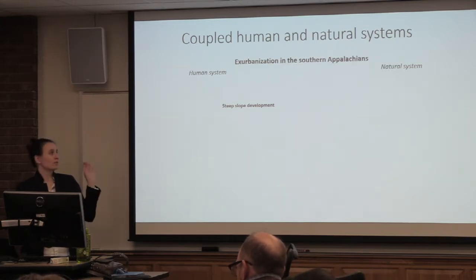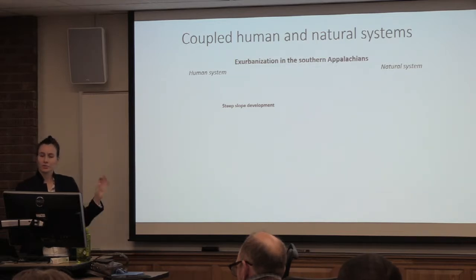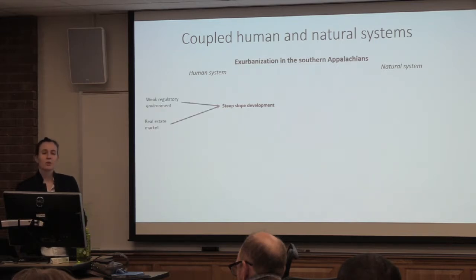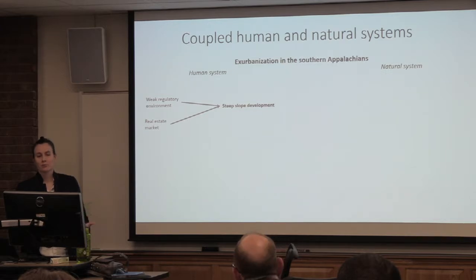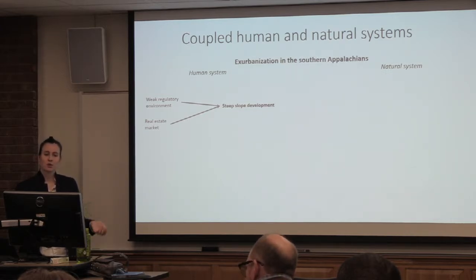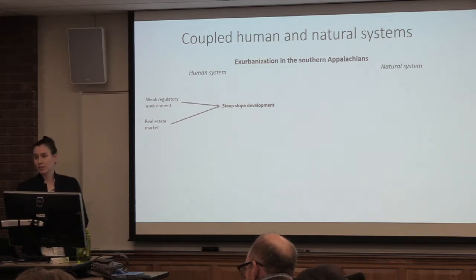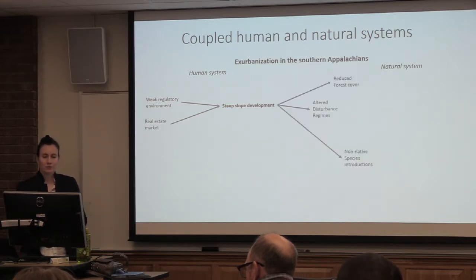We looked at what's going on with this human system and natural system in the steep slope development process. We know there's a weak regulatory environment in the Southern Appalachians for a number of reasons, some of them cultural. There's also a really strong real estate market. Both of those things are driving steep slope development — because there's no limitation on it, and because people want to live on these steep slopes for the scenic views.